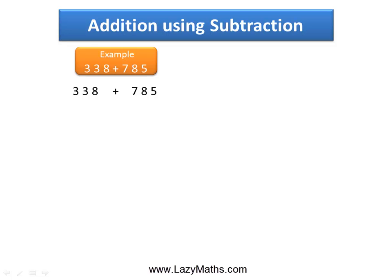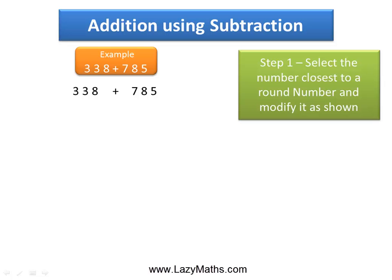In this example, we'll take 785 and round it to its nearest number, which can be 800. Now, 785 is nothing but 800 minus 15.